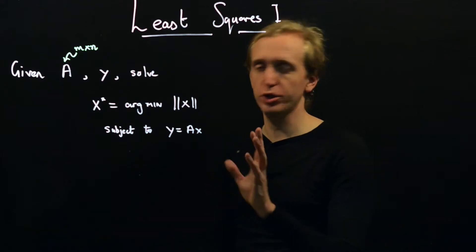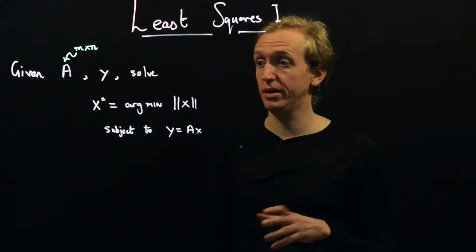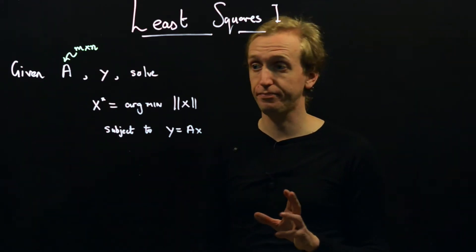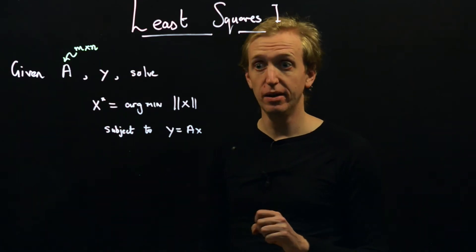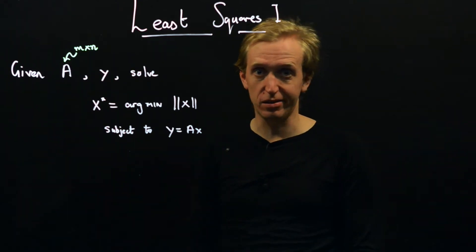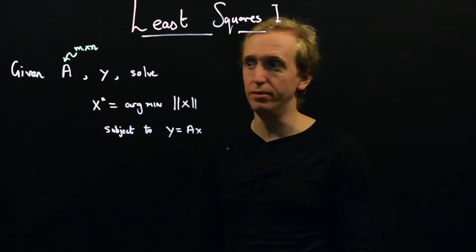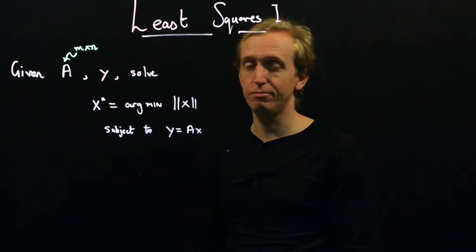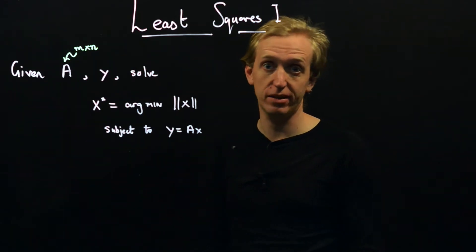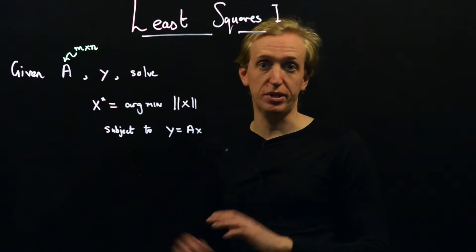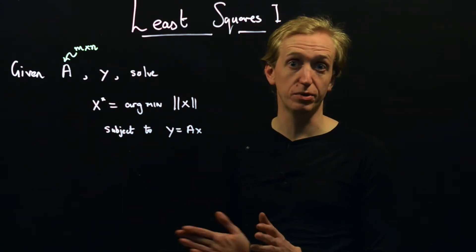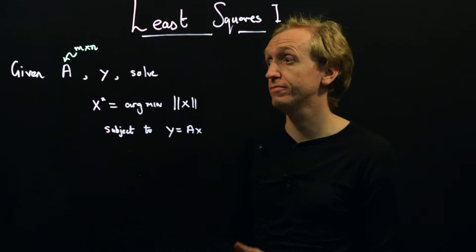We'll start by talking about the problem and then present the solution for the matrix case. As we'll see, these ideas go beyond linear systems of matrix equations and can handle all sorts of exotic objects. We'll use them to solve some simple optimal control problems, but we'll start with the matrix case just to explain everything.